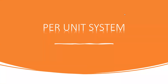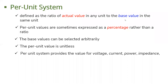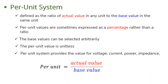Welcome to the Wisdom is Power channel. In this video I'm going to discuss the per unit system. The per unit system is defined as the ratio of actual value in any unit to the base value in the same unit. Per unit values are sometimes expressed as a percentage rather than a ratio. The base values can be selected arbitrarily, and the per unit value is unitless. The per unit system provides values for voltage, current, power, and impedance.